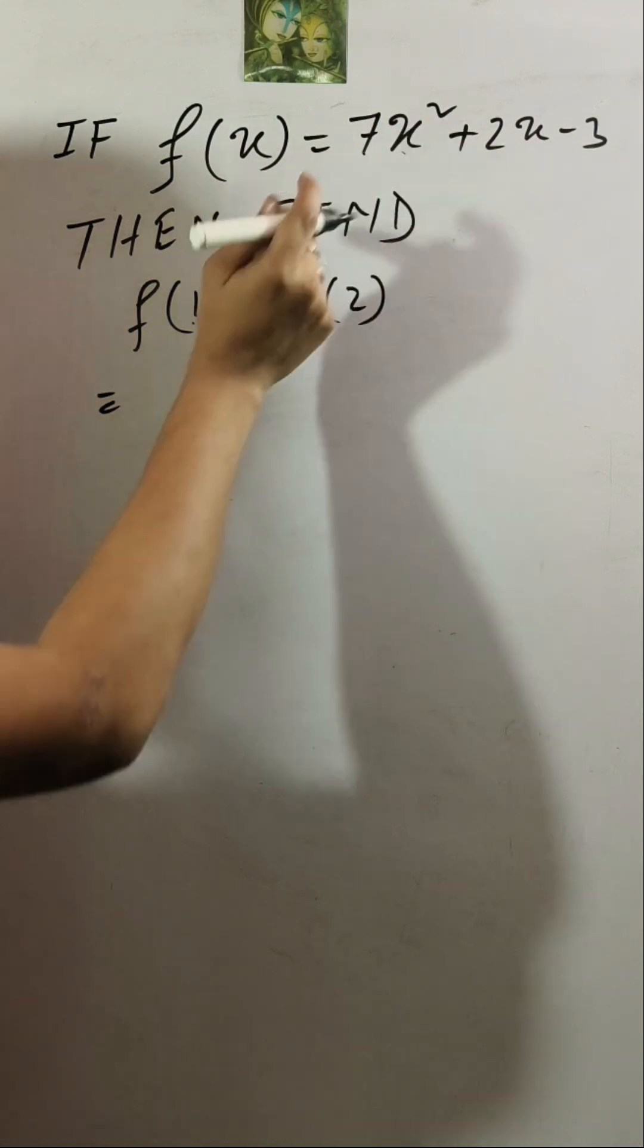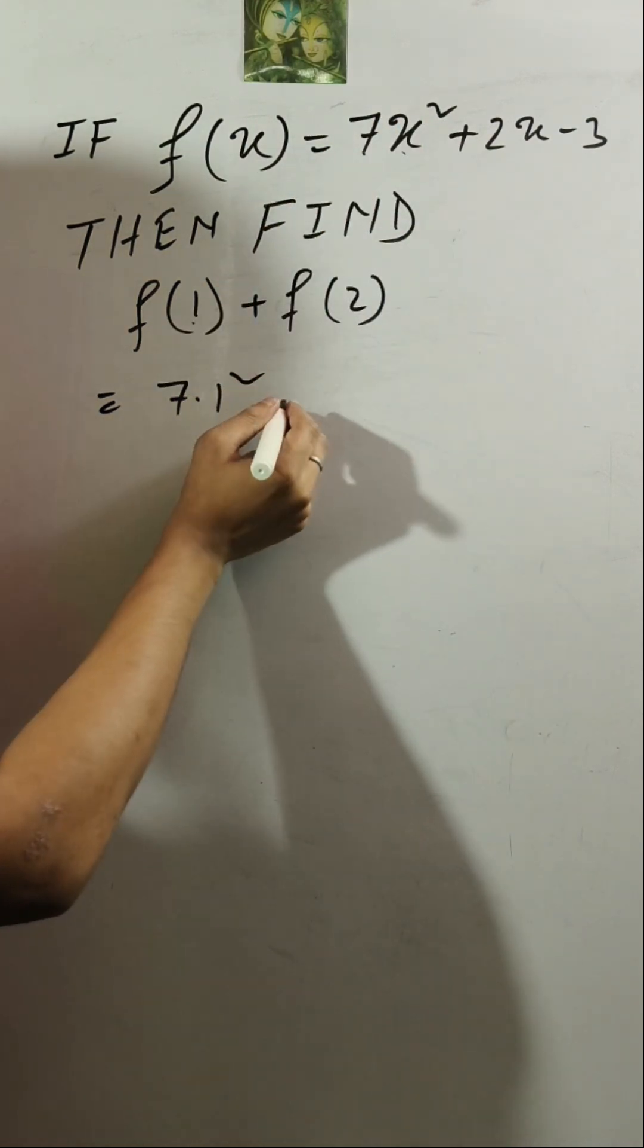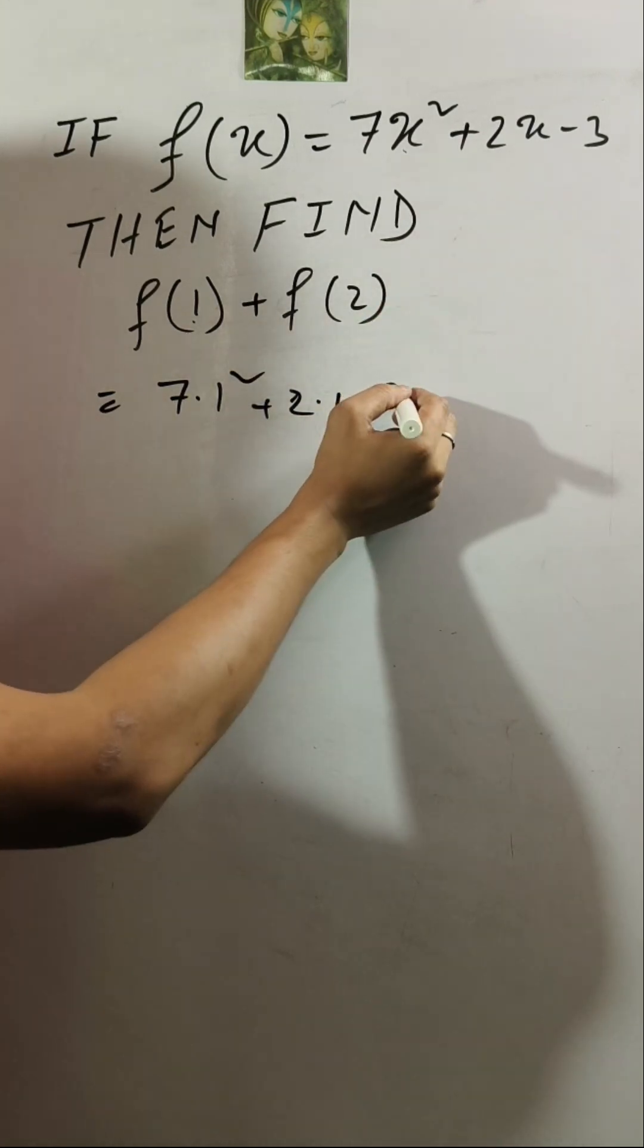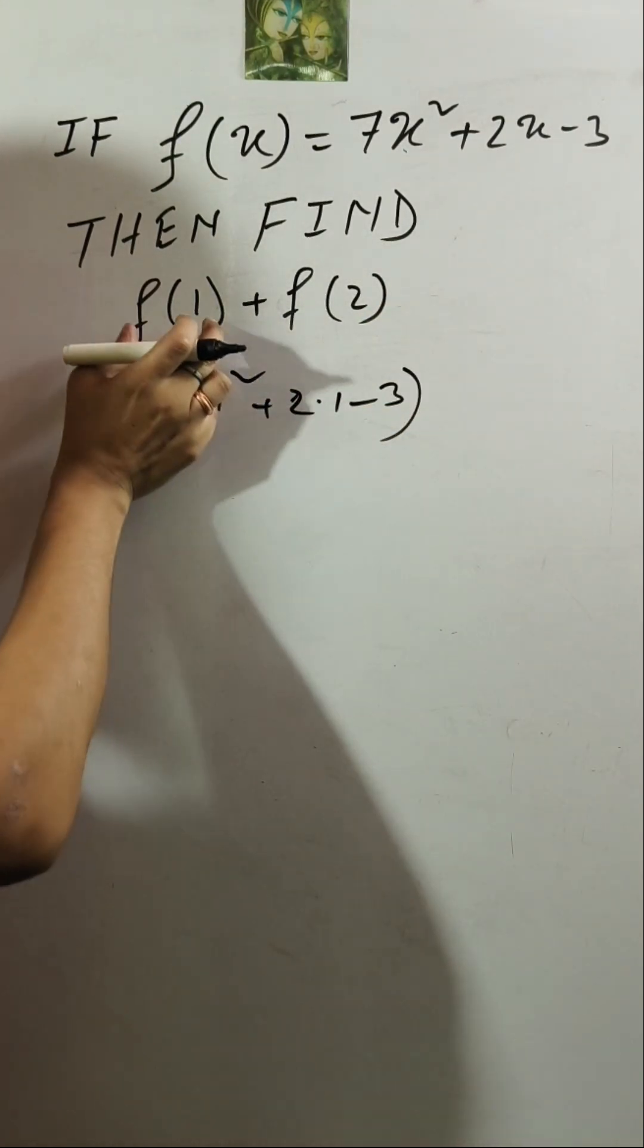It will be 7 into 1 square plus 2 into 1 minus 3. It is the expression for F of 1.